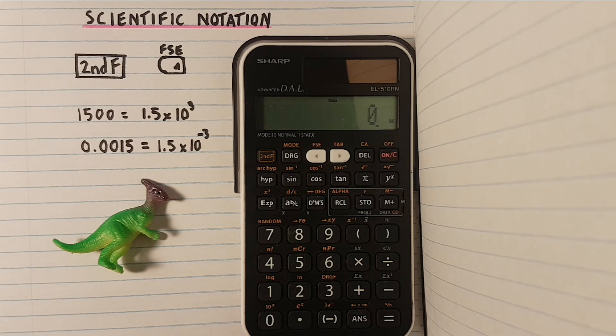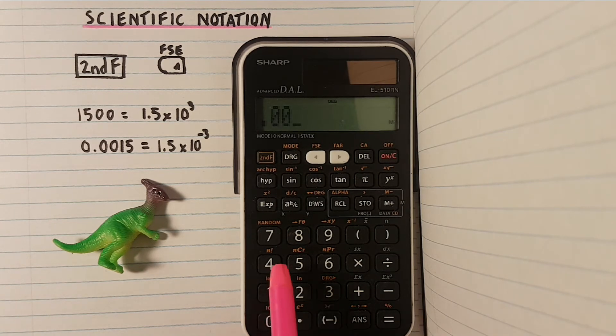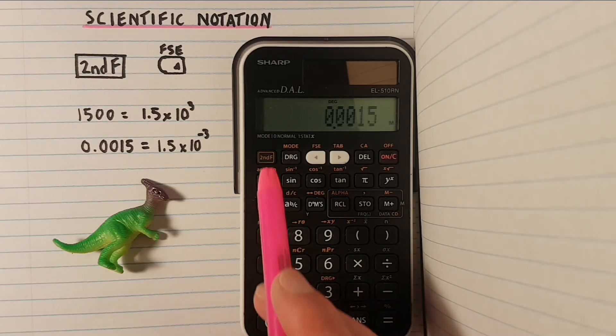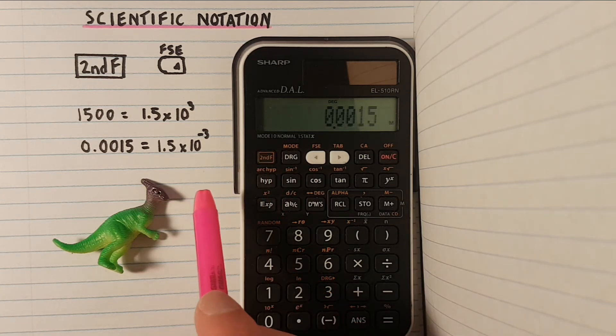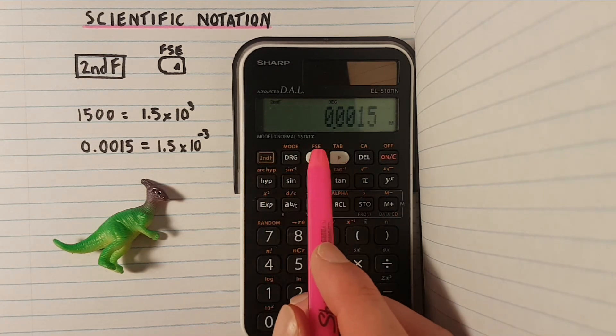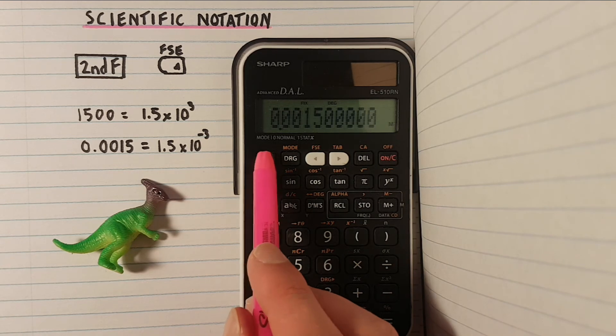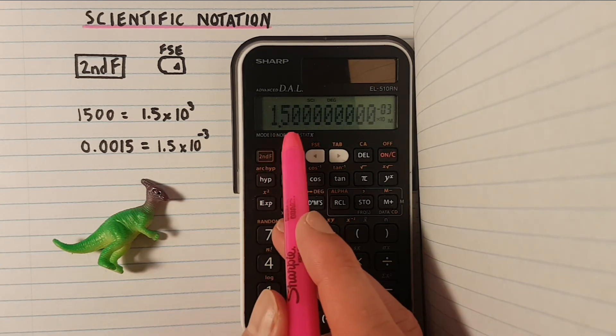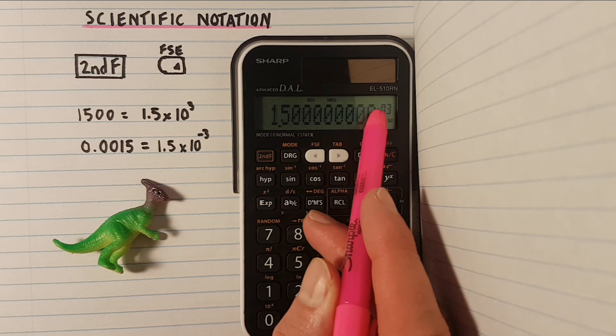This also works for very small numbers. If we enter 0.0015 onto the screen and go through the steps to turn it into scientific notation with second function, left arrow, second function, left arrow, we see we now have 1.5 times 10 to the negative third power.